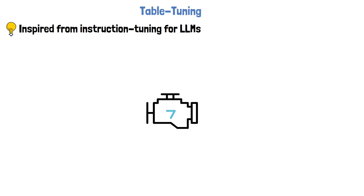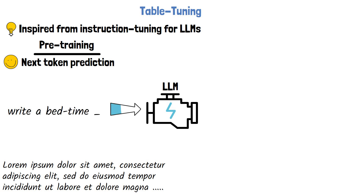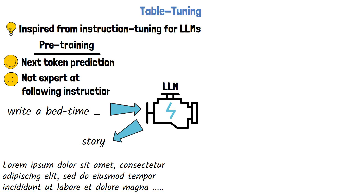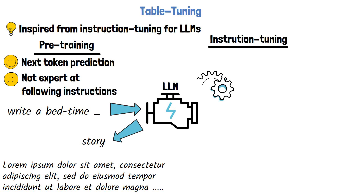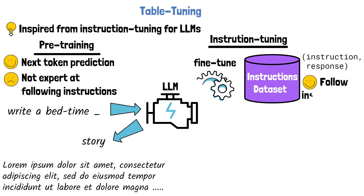So how did the researchers create a model that performs better on table tasks? The answer is a new approach they call 'table tuning,' inspired by instruction tuning, which has proven successful for large language models. As a reminder, large language models are first pre-trained on a huge amount of text to learn general-purpose knowledge, making them good at predicting the next token — for example, completing 'write a bedtime' with 'story.' However, after pre-training, the model is still not good at following human instructions.